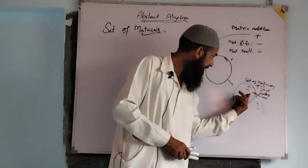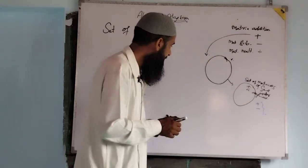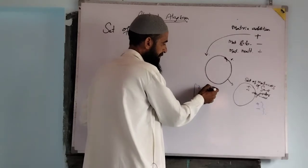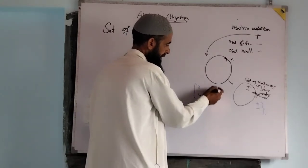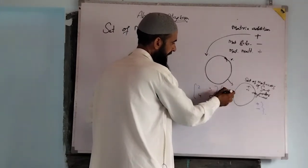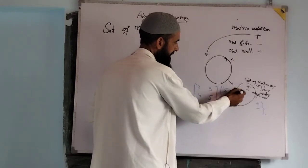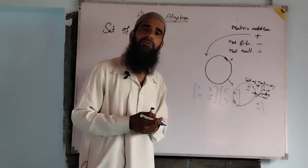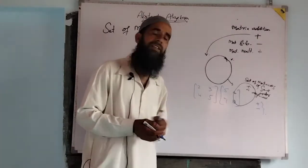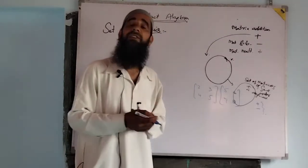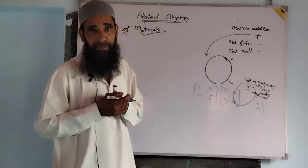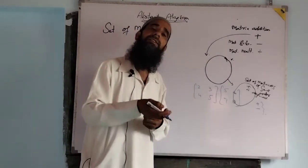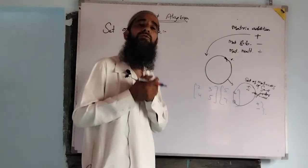For example, if we have a matrix of order two cross two: [2,3;4,5] and next matrix [5,6;7,8] — when we multiply these two matrices, multiplication is defined and the resultant matrix is also a two cross two matrix.